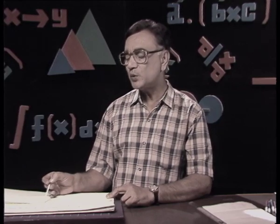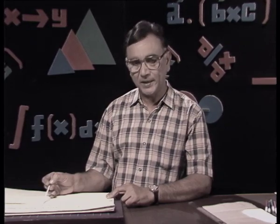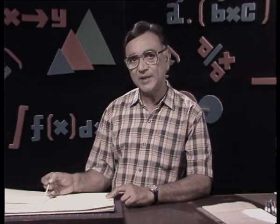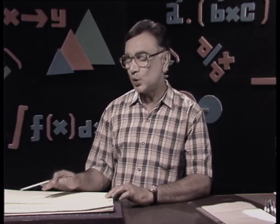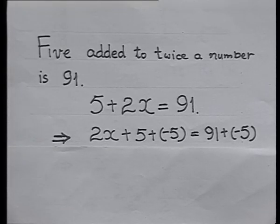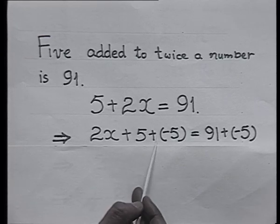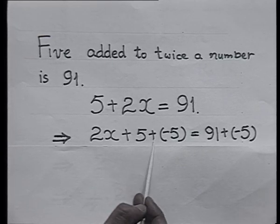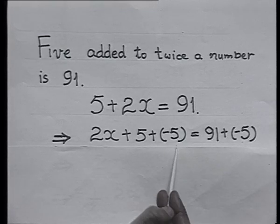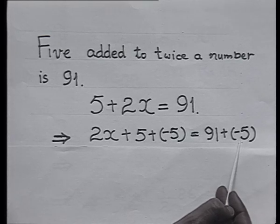Now, the number which was not known to me I have taken as x, and we call that a variable. How do I solve for x? I am interested in finding the value of x. So I take 2x plus 5 and to remove this 5, I add negative 5 to it. In an equation, if a certain number is added onto the left-hand side, the same number has to be added onto the right-hand side.